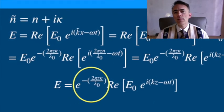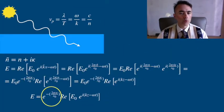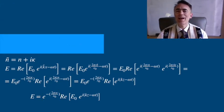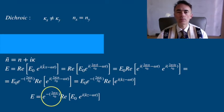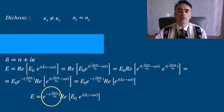When we covered dichroic materials we mentioned that those materials absorb one polarization but not the other. In that case we had that the real part of the index of refraction, n, is the same for both directions x and y, if the wave propagates in the z direction.